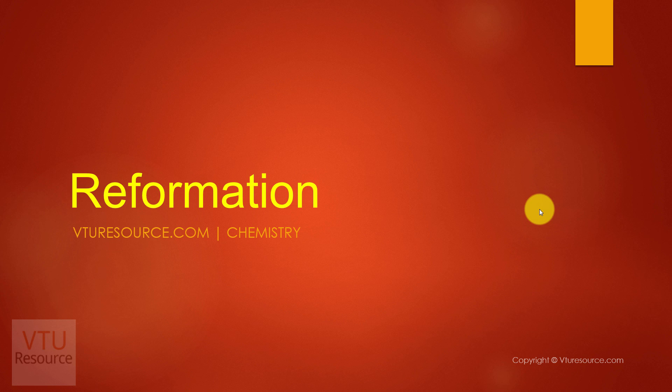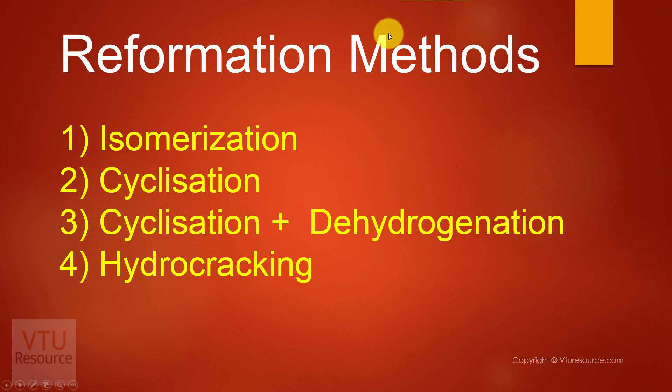Now let us see how reformation is carried out. So reformation is brought about by some chemical processes. Reformation is brought about by either isomerization, cyclization, cyclization and dehydrogenation, and hydrocracking. Let us discuss these chemical processes one by one.